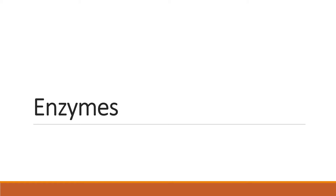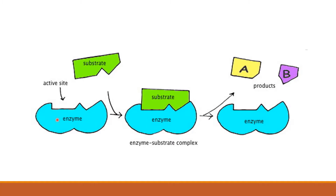Today we are going to talk about enzymes. Enzymes are proteins that speed up reactions. Each enzyme has its own unique shape. If you take a look at this enzyme right here, you will notice that it has this area known as the active site. The active site is where something known as a substrate will bind — it's like a puzzle; the substrate must have the same shape to fit into that active site.